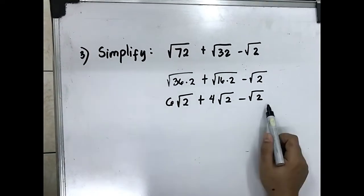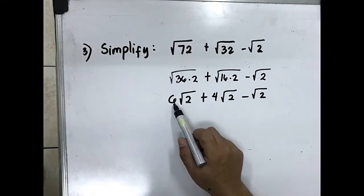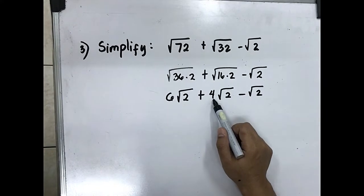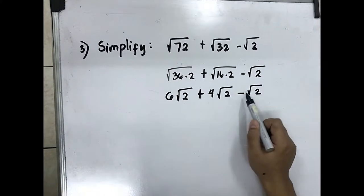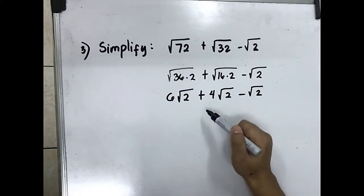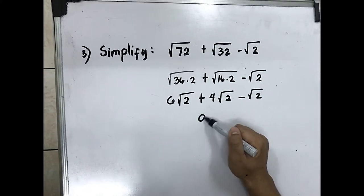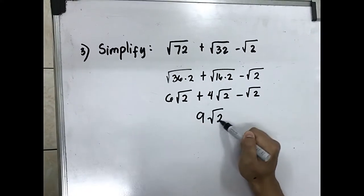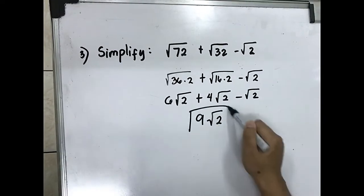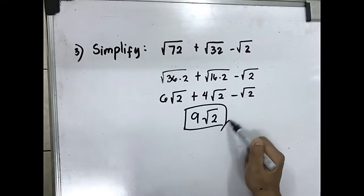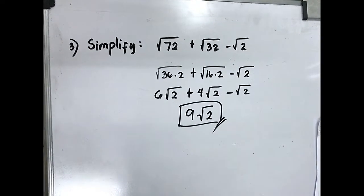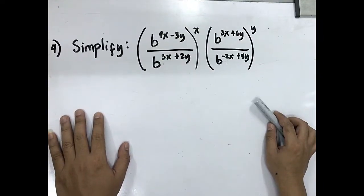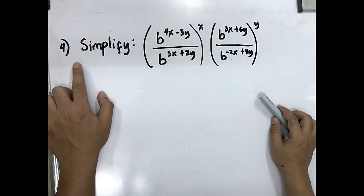Combine like terms: 6 square root of 2 plus 4 square root of 2 minus square root of 2. That gives 9 square root of 2.